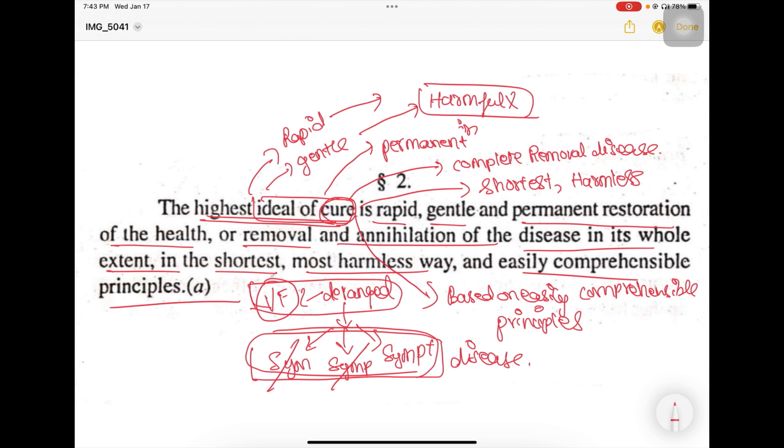So the principles that our cure should be based on have to be easily understandable principles. The principles which are easily understandable are going to be the laws of nature. The laws of nature are always fixed, they are not ever changing. Unlike many other laws, the laws of nature are always fixed and they're very easy to understand. And a method of cure or method of treatment that is based on these easily comprehensible laws of nature are going to be very reliable. So these are the qualities of an ideal cure.